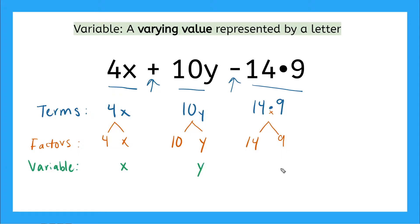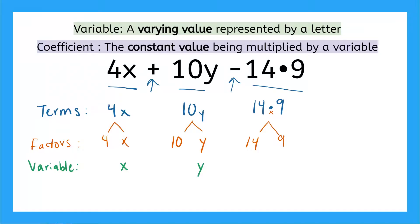Now when we are multiplying a constant value like this 4 here by a variable, this constant value also has a special name. It's called a coefficient. A coefficient is the constant value that's being multiplied by a variable.